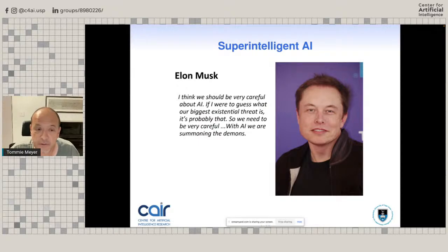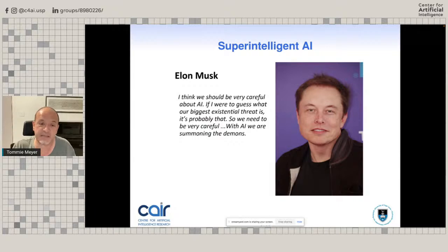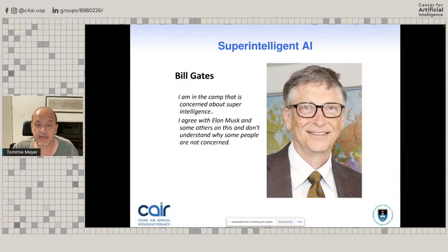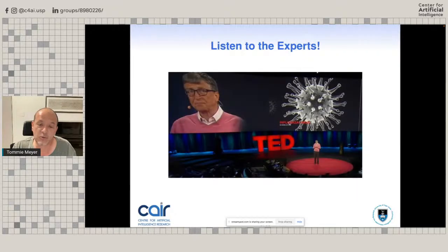Here's Elon Musk, a couple of years ago, saying: 'I think we should be very careful about AI. If I were to guess what our biggest existential threat is, it's probably that. With AI, we are summoning the demons.' Similarly, Bill Gates made a similar statement: 'I'm in the camp that is concerned about superintelligence. I agree with Elon Musk and some others on this, and I don't understand why some people are not concerned.' On the one hand, one could argue these are people who know what they're talking about — for example, Bill Gates in 2015 gave a TED talk about the possibility of a pandemic involving a coronavirus.